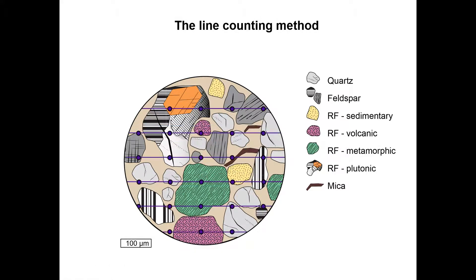Another method is the line counting method. Here you define several lines within your thin section. Then you move your thin section laterally, always using the same step length and count the grain under the crosshairs. The chosen step length again depends on the grain size of your sample.